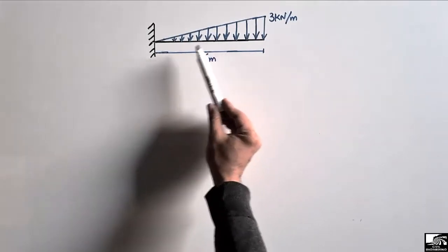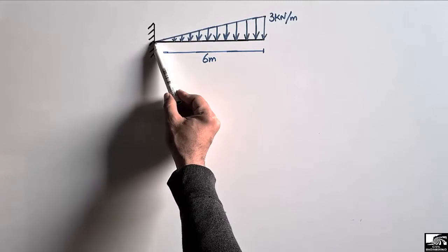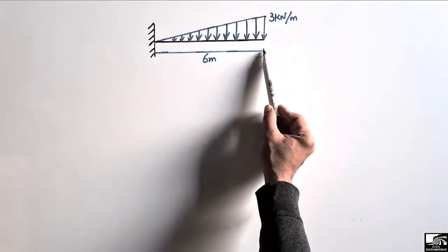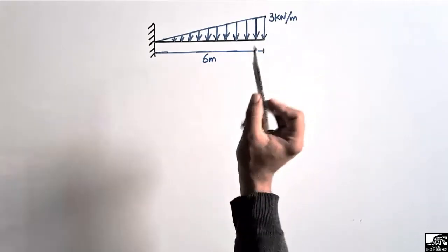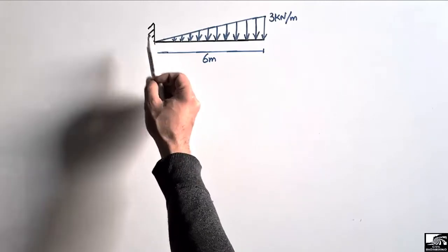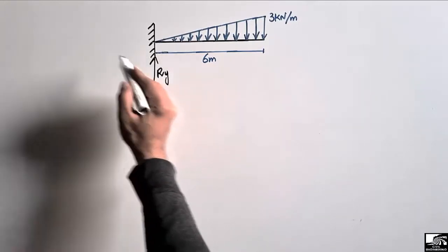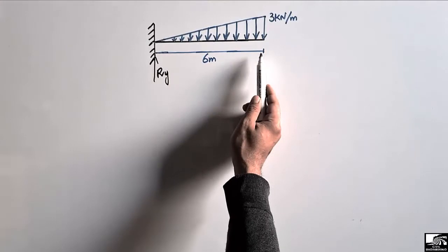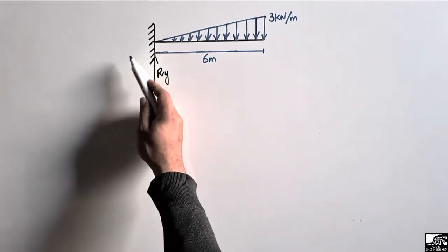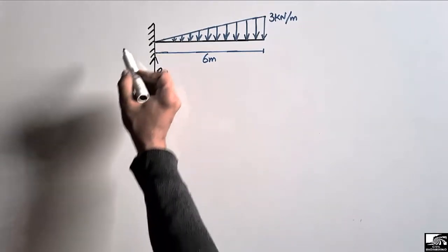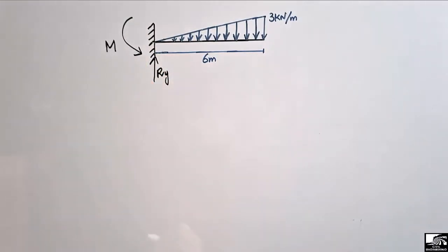The load starts from zero at zero distance with zero magnitude and ends at 6 meters with a magnitude of 3 kN per meter. There is only one support — a fixed support — which can resist vertical load and horizontal load. There is no horizontal load acting on this beam, so the horizontal reaction is zero. The fixed support can also take the moment from the applied load.